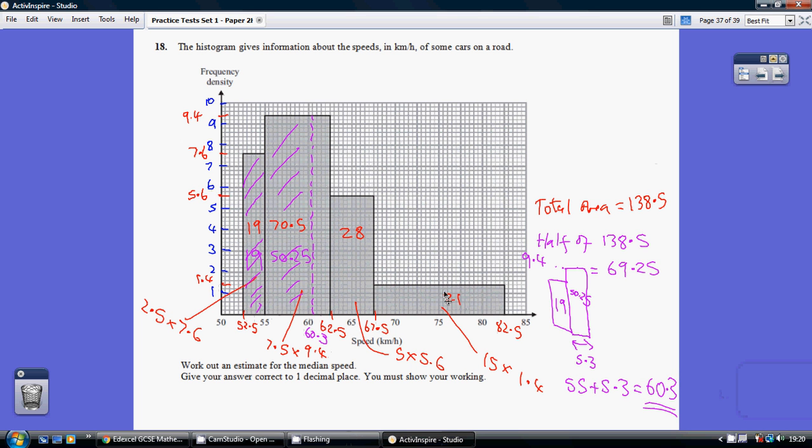They total to 138.5, so halving this I get 69.25. I need to get 69.25's worth of area over here. Well, clearly that's going to use up all of this first bar, which is 19. So what am I left with? I'm left with an area of 69.25 take away 19, which is 50.25.